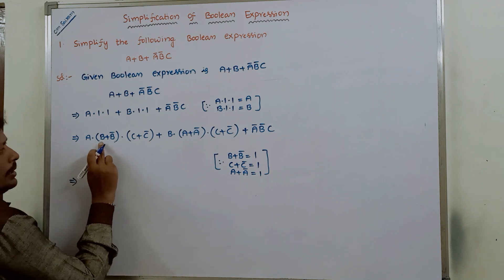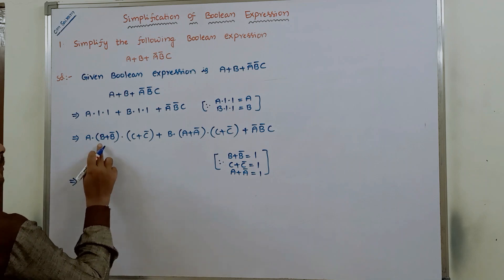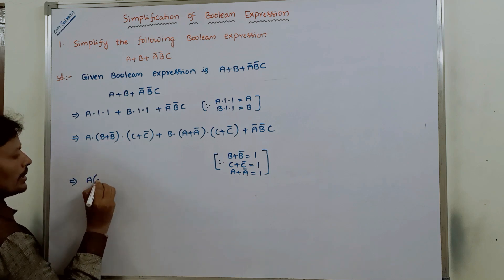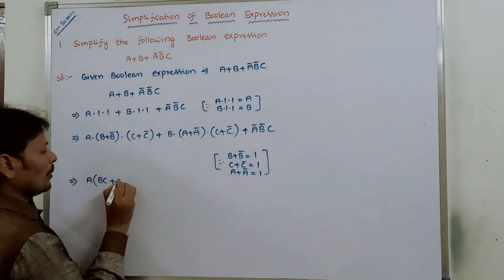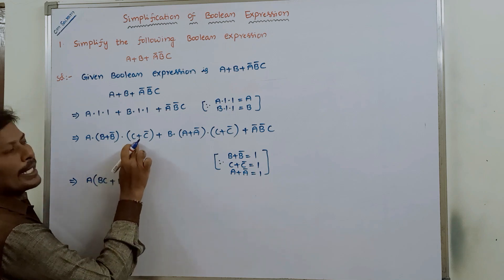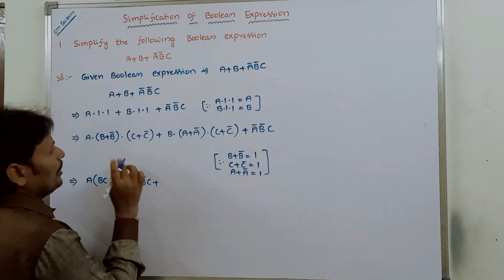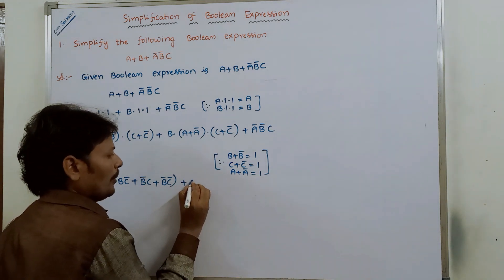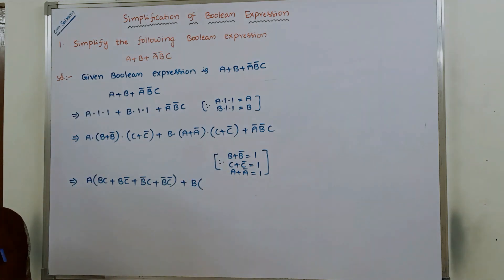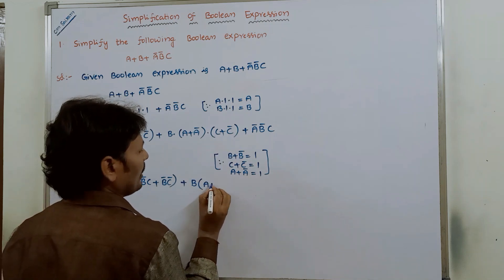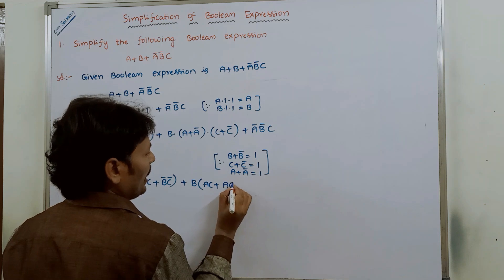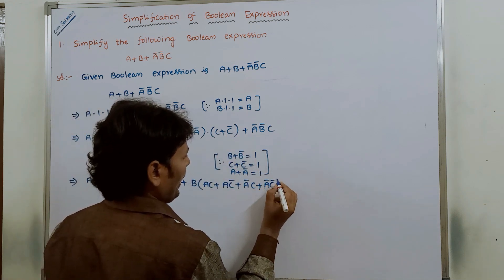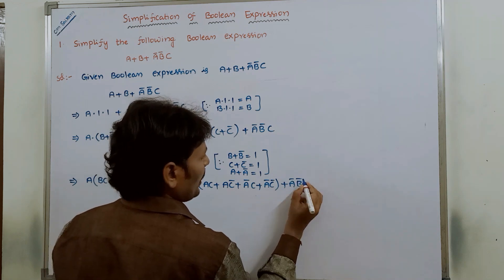Now, for the first term, (b + b̄)·(c + c̄) is expanded: b·c = bc, b·c̄ = bc̄, b̄·c = b̄c, b̄·c̄ = b̄c̄. For the second term, (a + ā)·(c + c̄) is expanded: a·c = ac, a·c̄ = ac̄, ā·c = āc, ā·c̄ = āc̄. The third term remains ā·b̄·c.